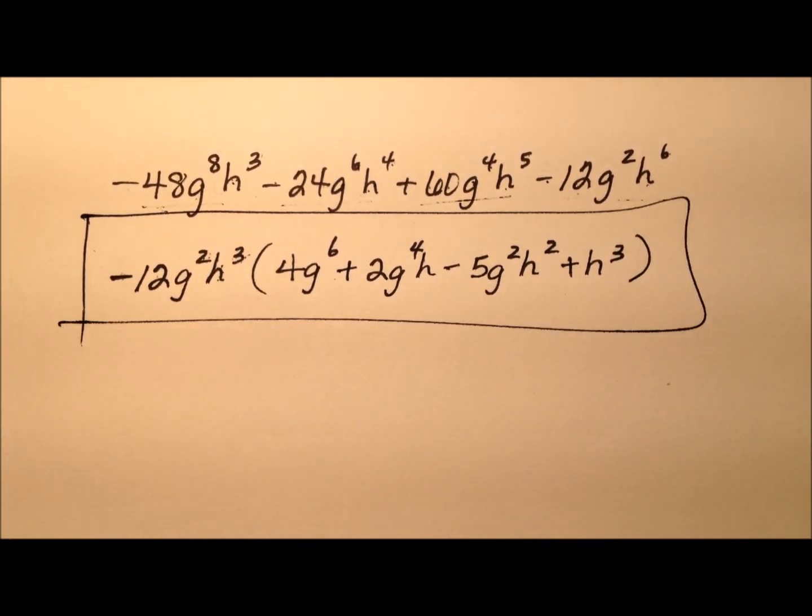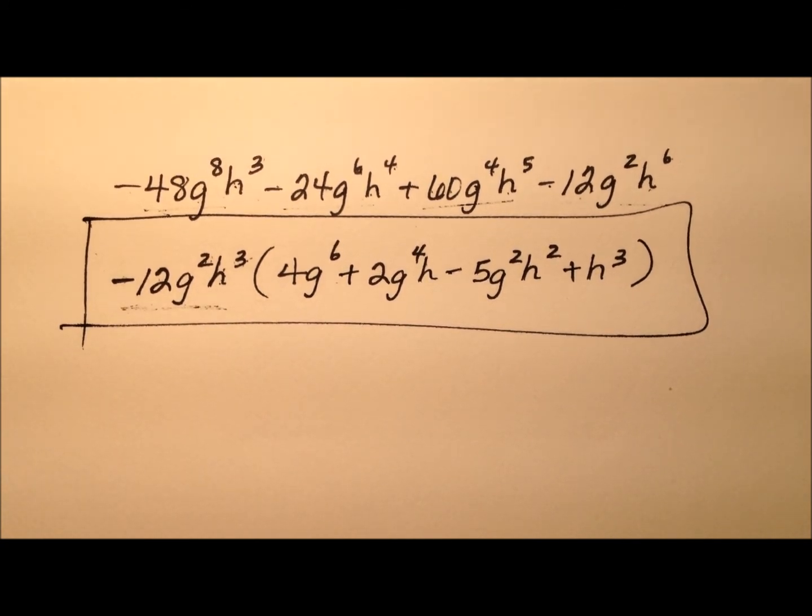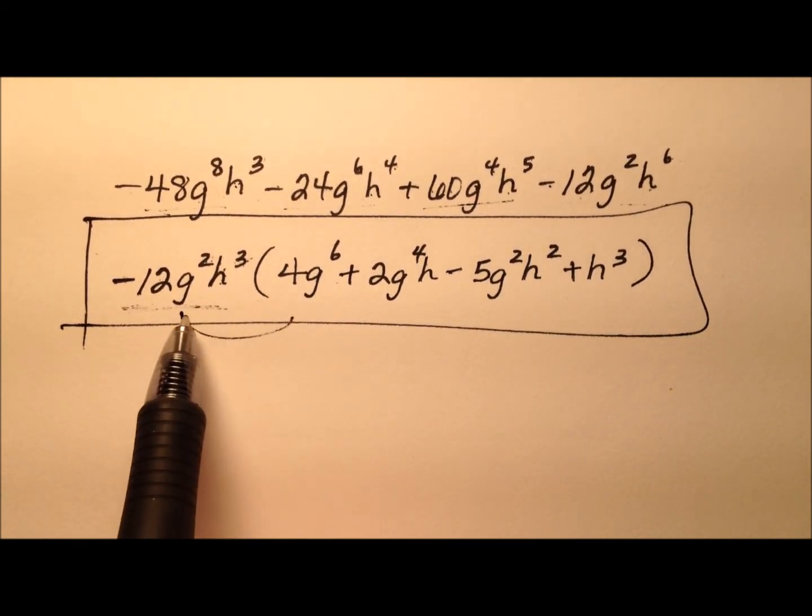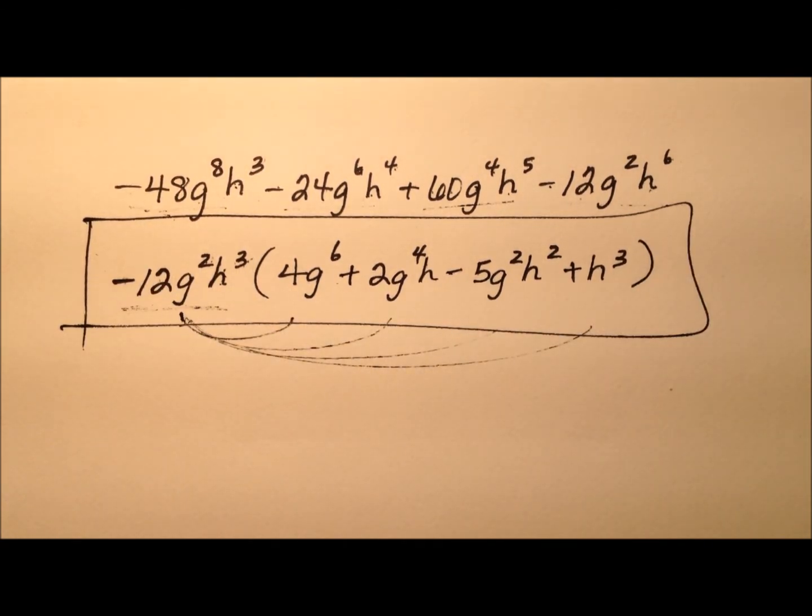So here we have the factored form after factoring out this greatest common factor. And once again, you can always distribute that back through and make sure you get that initial expression.